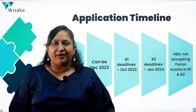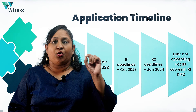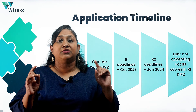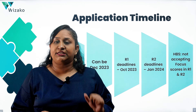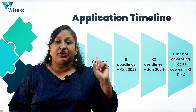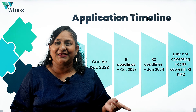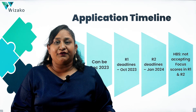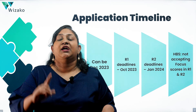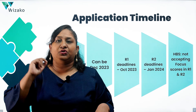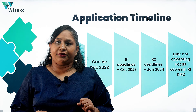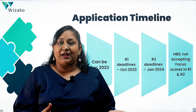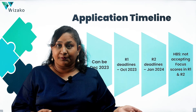Reach out to the schools you are targeting even if they haven't released a public statement. Send a mail to the admissions committee asking whether they will accept Focus Edition scores this year. First, check the FAQ pages on the school's admissions website; if the Focus Edition is not mentioned there, do your research and email the school to find out what they are planning.